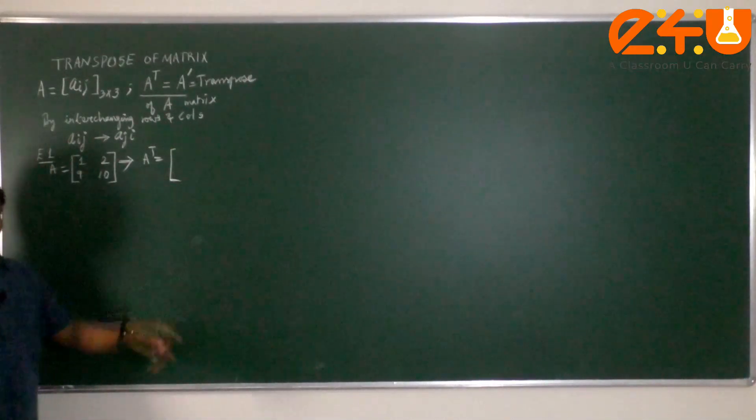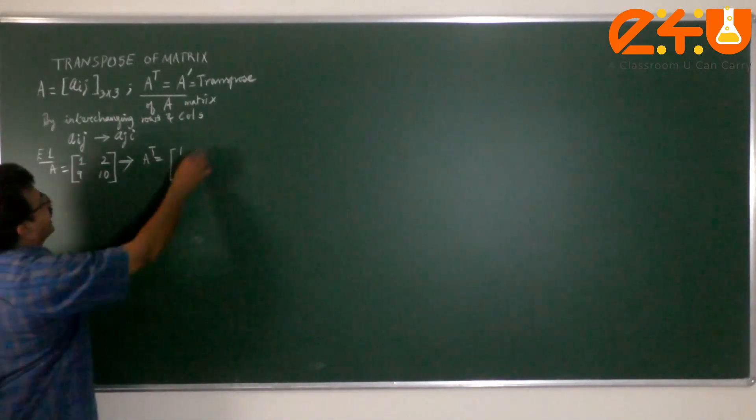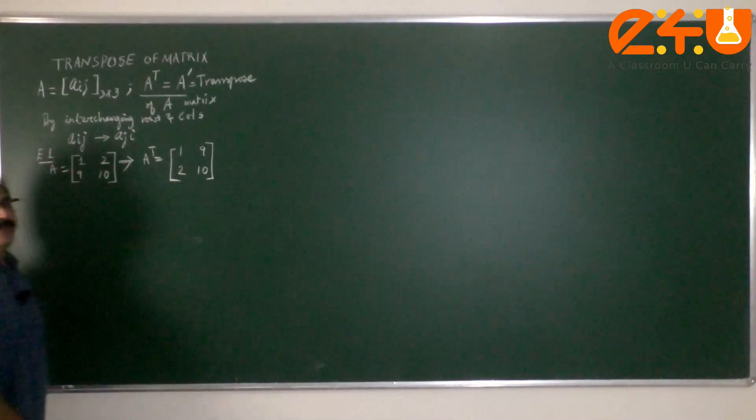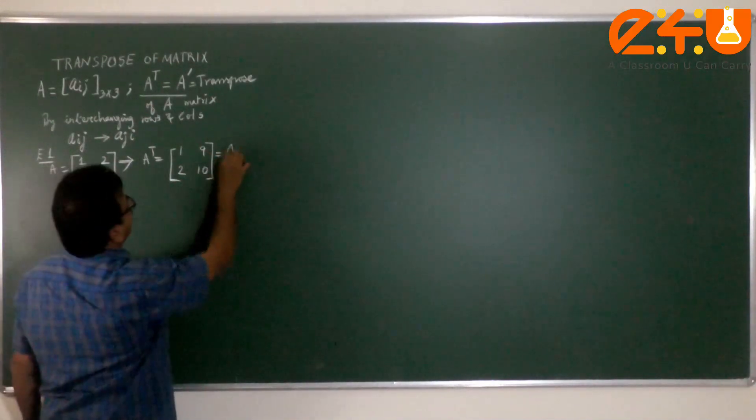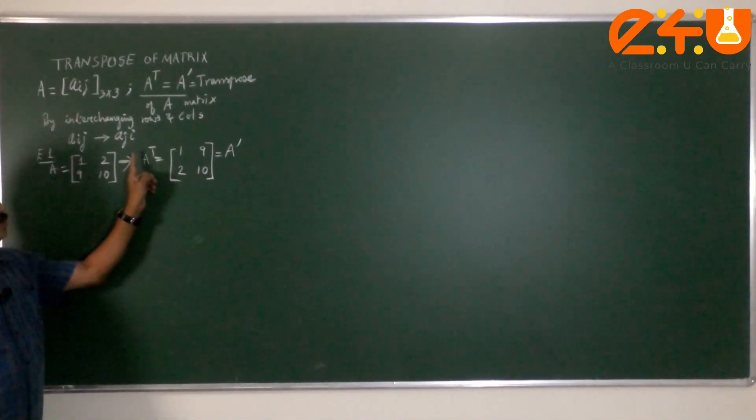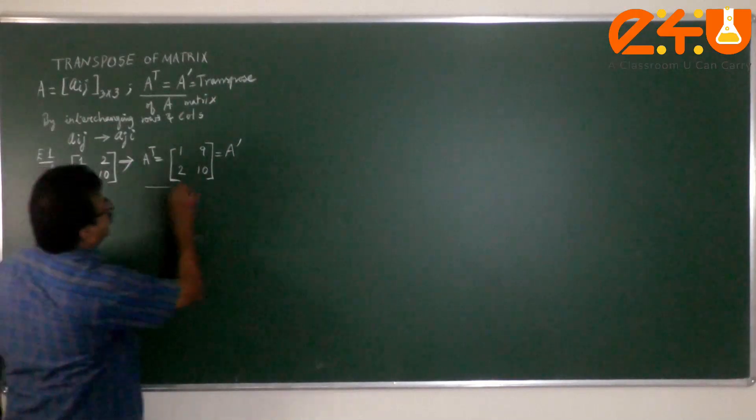That implies A transpose: the row 1 which contains 1, 2 becomes the first column and second row 9, 10 becomes the second column. That is what is given as A transpose. You can write it as A with T as superscript or with A dash.